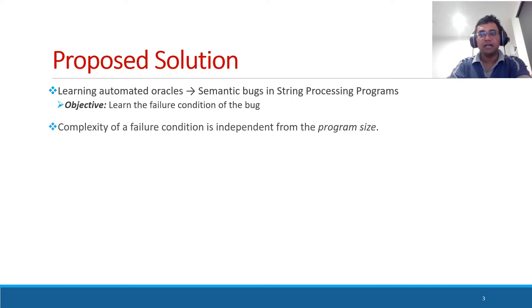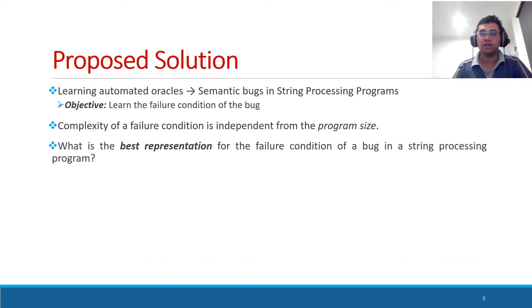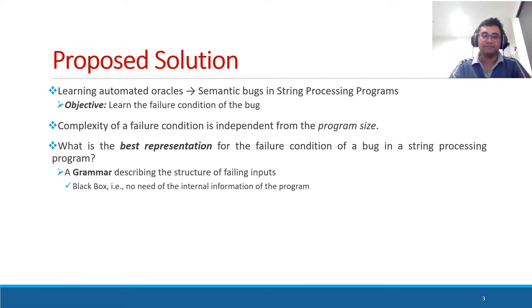Usually, the complexity of a failure condition is independent from the program size. So, what is the best representation for the failure condition of a bug in this category of programs? It is a grammar describing the structure of failing inputs. Because when such a condition, especially a failure condition, is defined in terms of program inputs, it is black box. And such a definition can be used independent of the internal information of the program.